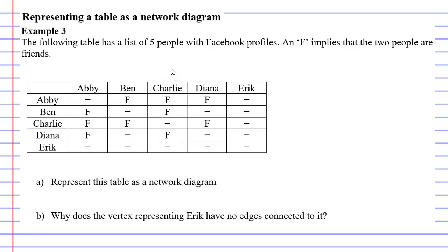You will notice that we have 5 people with Facebook profiles: Abby, Ben, Charlie, Diana and Eric. Now an F implies that the 2 people are friends.